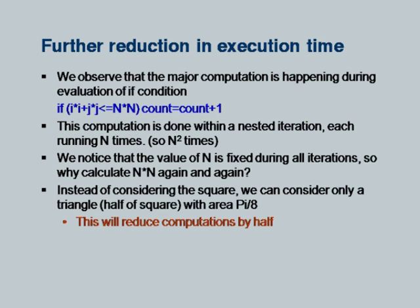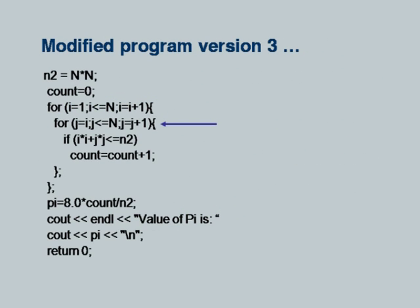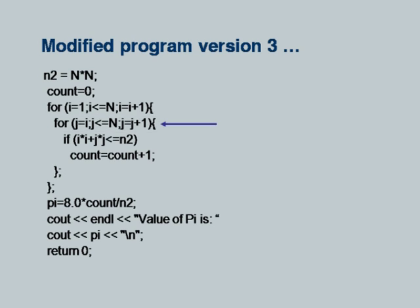The idea is that instead of considering the full square, I consider only a triangle. If I do i from 1 to N and j from 1 to N, I am looking at all points within the square. But if I start j equal to i instead of 1 — so if i is 1, j starts at 1; if i is 5, j starts at 5 — I am using the fact that the square is symmetric around its diagonal and calculating only the triangle. By doing this I calculate either the upper or lower triangle, which is half of the square, so I am doing half the computations.